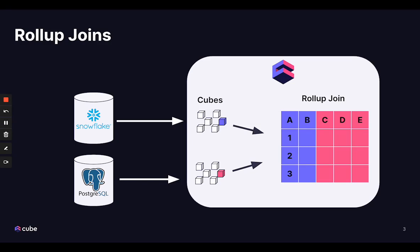Another use case: if we have two tables that update at different frequencies and it's cost or time prohibitive to materialize the join in a single pre-aggregation, we can save the join operation for runtime with the rollup join. It's even possible to use these for user entitlements tables. If you maintain your row-level security entitlements mappings in a SQL table, you can rollup join that back to your business data pre-aggregation. Then you filter your query on a provided user ID and you have an accelerated dataset that respects your row-level security rules.